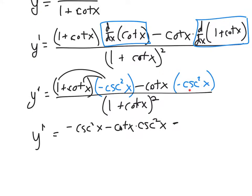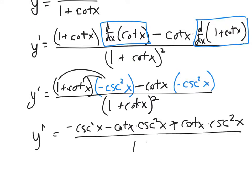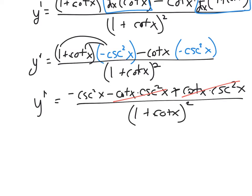Then minus this piece — it's just one thing multiplied by another, so it's one term. It's a minus and a negative, so it's going to end up being a positive. That's going to be plus cotangent X times cosecant squared X, all over (1 plus cotangent X) quantity squared. Now I can see what simplifies: I have cotangent cosecant squared as a positive and cotangent cosecant squared as a negative, so those cancel out, leaving a fabulous Y prime equals negative cosecant squared X over (1 plus cotangent X) quantity squared.